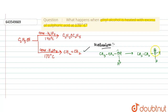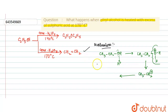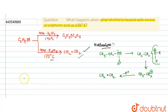H2O is a very good leaving group, so it leaves the molecule, and as a result a positive charge arises on the carbon. Then one hydrogen atom from the adjacent carbon is released as H+, and a molecule of ethene is formed. This is the mechanism for the conversion of ethyl alcohol to alkene at 170 degrees Celsius.